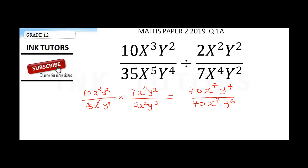We now have 70x⁷ on both the numerator and the denominator, so they cancel out. We're left with y⁴ over y⁶. Applying the law of indices, this is y raised to the power 4 minus 6, which equals y⁻², which equals 1 over y squared. As easy as that.